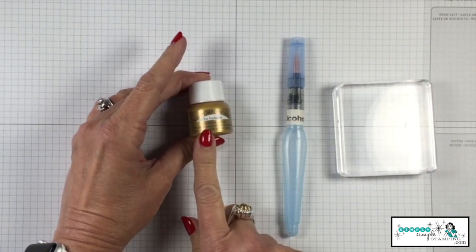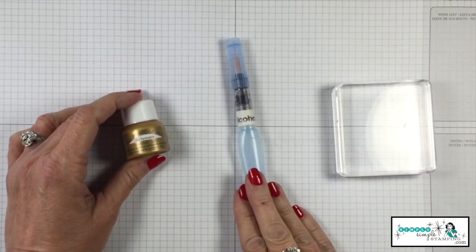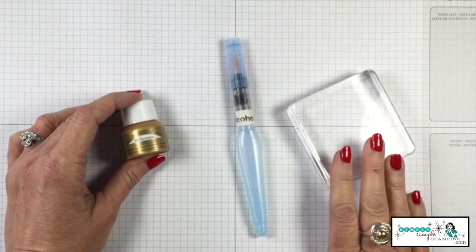So I'm going to be using the Vegas Gold Shimmer Paint. I've also got an aqua painter filled with rubbing alcohol and just one of my clear blocks.